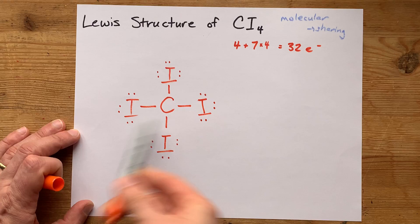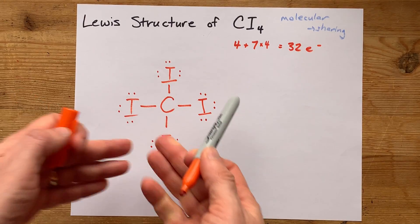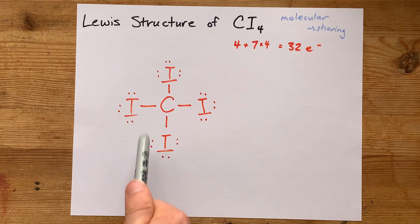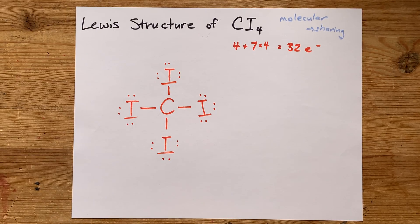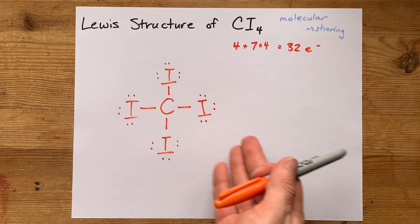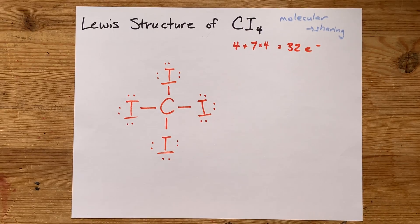There is my 32 electrons, and I've completed the octet on all of the iodines. In addition, this carbon also has a complete octet of eight electrons. This is my complete Lewis structure for carbon tetraiodide.